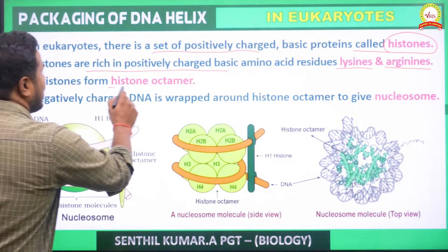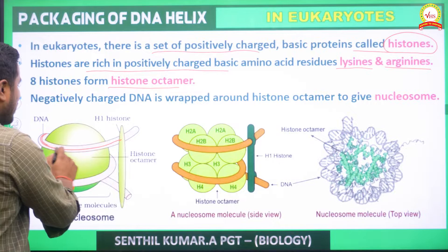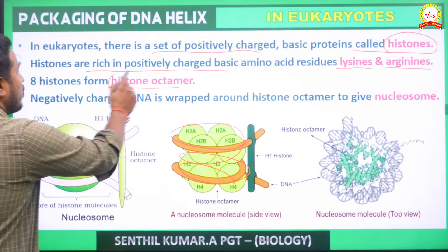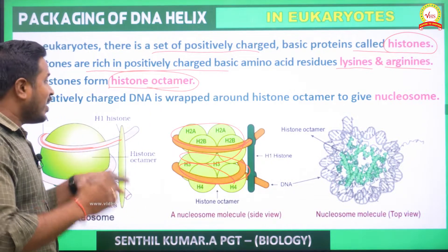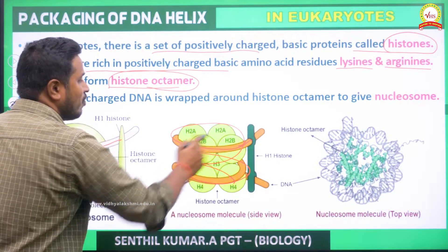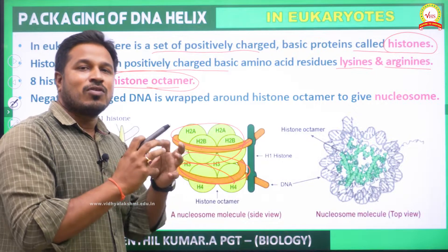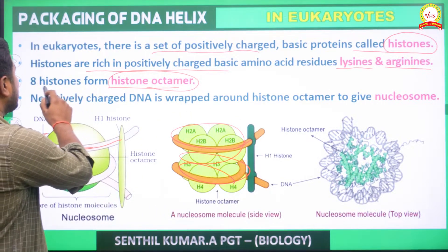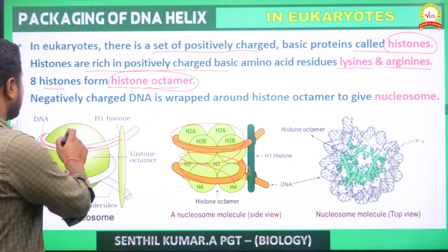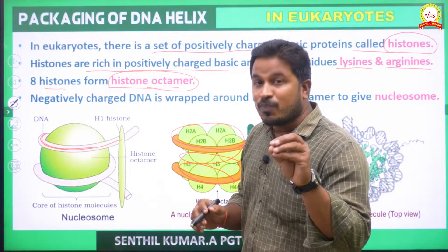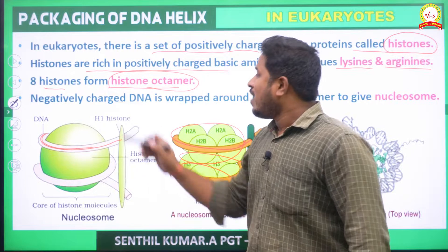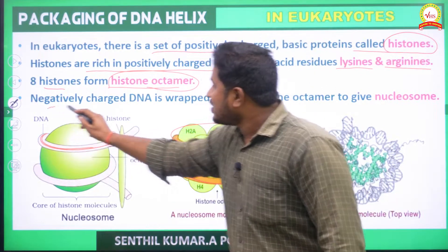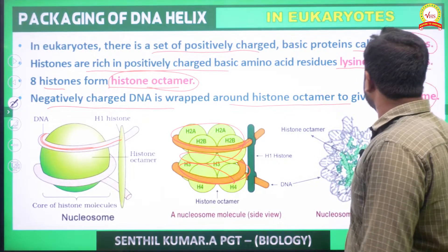For the condensation of our genetic material, the DNA wraps around a structure called the nucleosome. The histone octamer — when the genetic material and this octamer condense together — forms a nucleosome structure. The histone protein is positively charged and our genetic material is negatively charged, so they easily bind to each other. The negatively charged DNA wraps around the histone octamer to give the nucleosome.